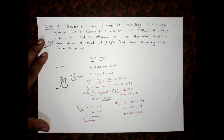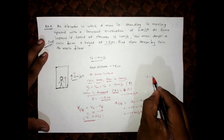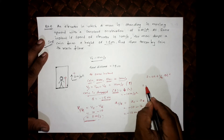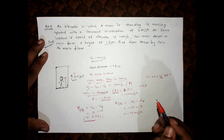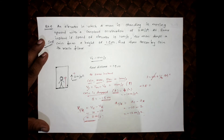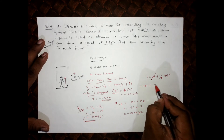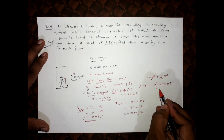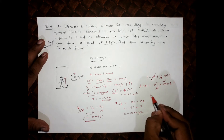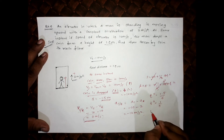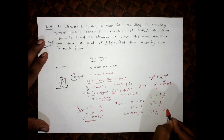Since the coin's displacement with respect to the elevator is 1.5 meter, applying s = ut + ½at²: u equals zero, displacement is −1.5, and acceleration is −12. So −1.5 = ½ × (−12) × t², giving t² = 1.5/6 = 1/4, therefore t = 0.5 second.